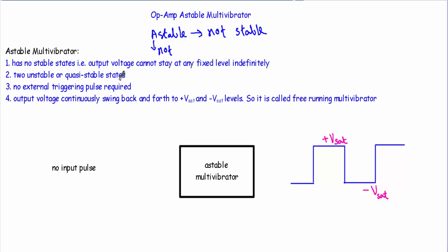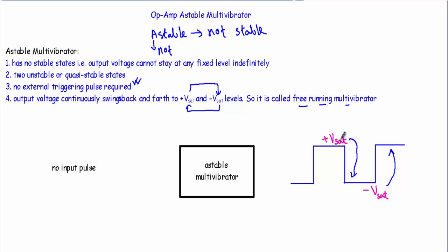An astable multivibrator will have two unstable or quasi-stable states. For the operation of an astable multivibrator, we don't have to apply any external triggering pulse. The output voltage will continuously swing back and forth between plus Vsat and minus Vsat levels. This transition occurs spontaneously, so this multivibrator is also known as a free-running multivibrator.